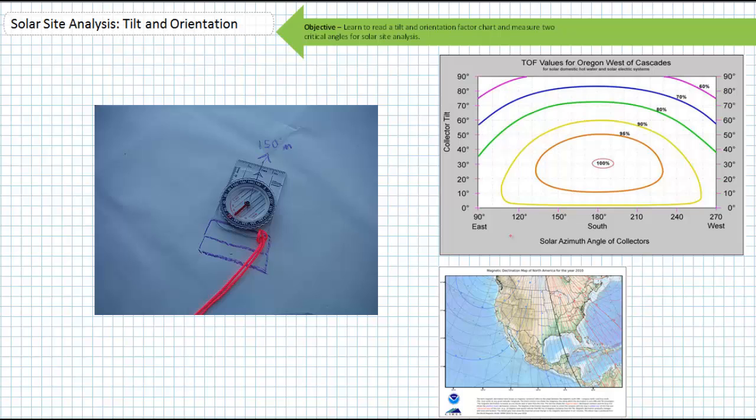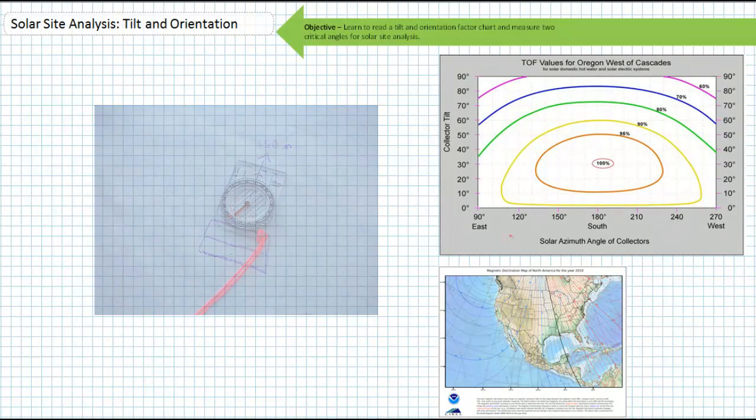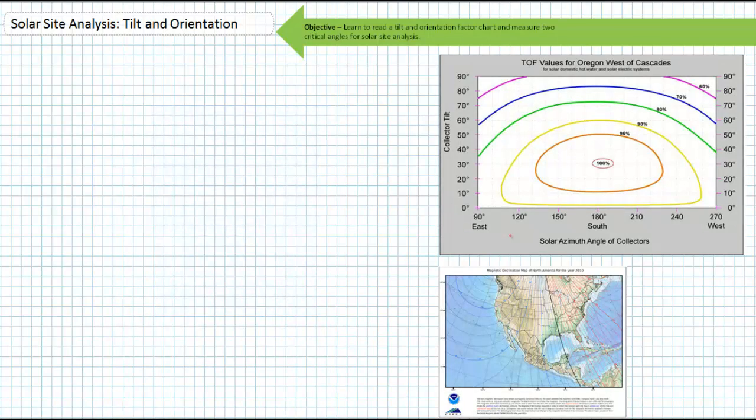Take this number and write it down. This is the bearing from magnetic north and not from true north. Do the necessary conversions for your specific declination. It's that easy.